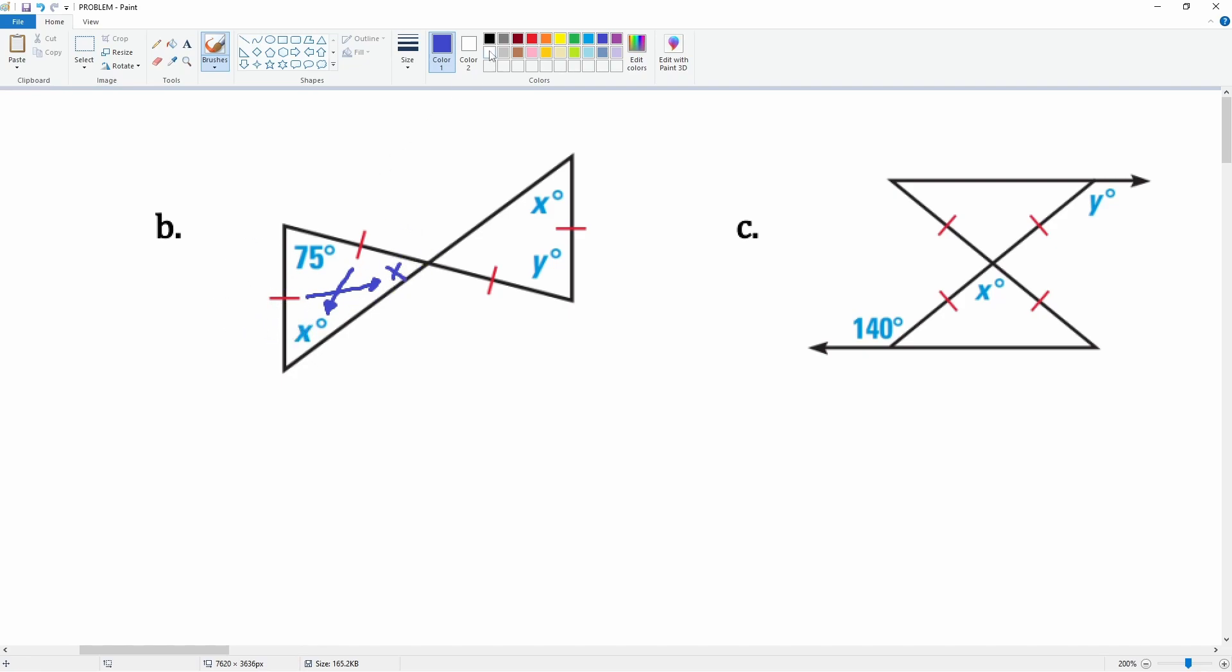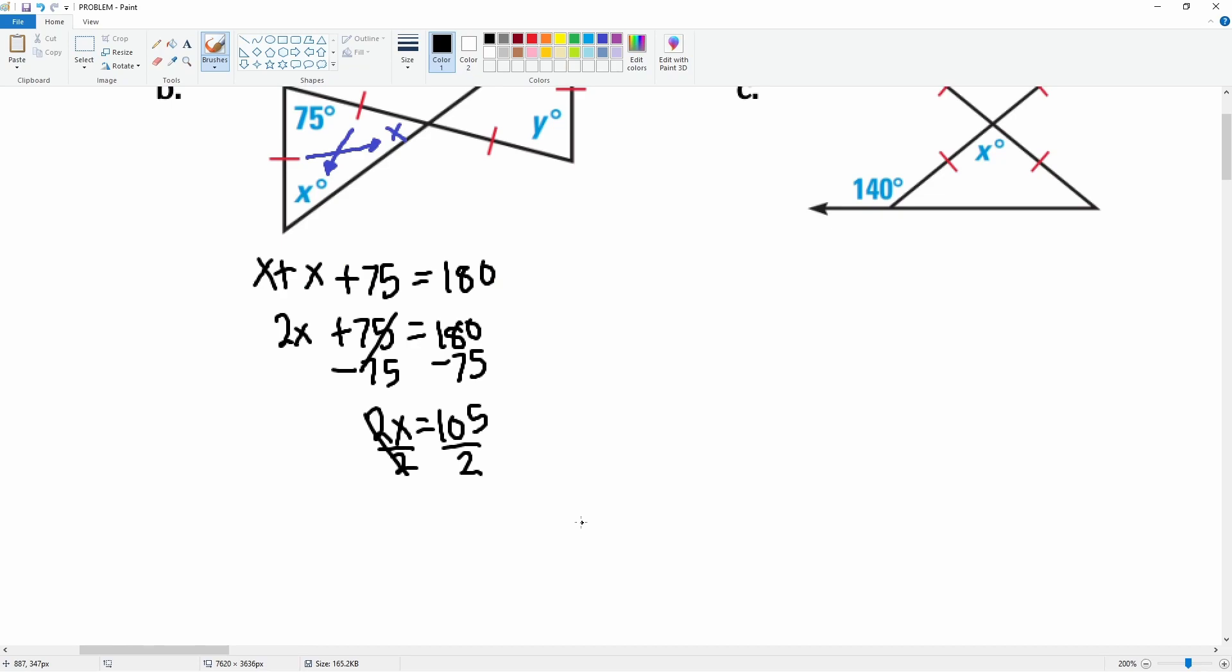So we can set this up to solve for x here. It's x plus x plus 75 is going to be equal to 180. The x plus the x gets you 2x plus 75 equals 180. Subtract 75 from both sides, 180 subtract 75 gets you 105. So 2x is equal to 105. Divide by 2 on both sides, you get x is equal to 52.5.